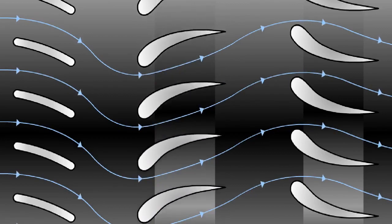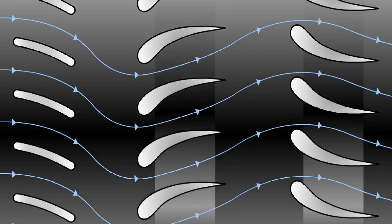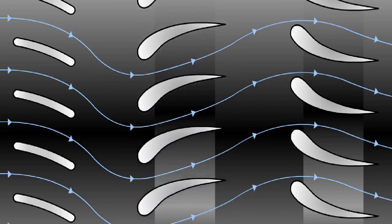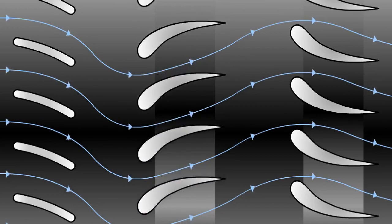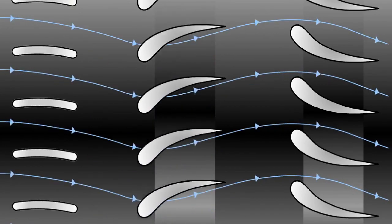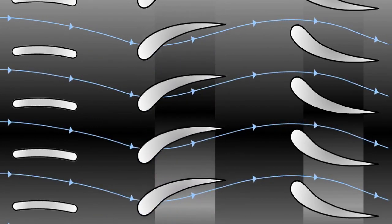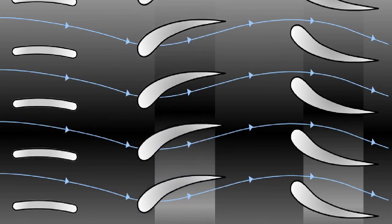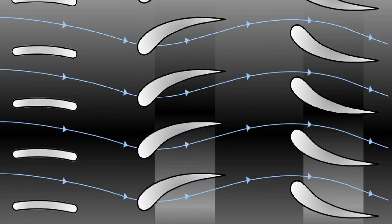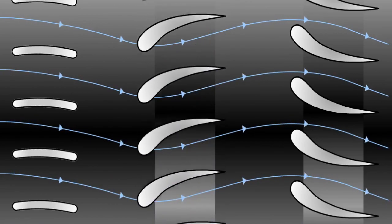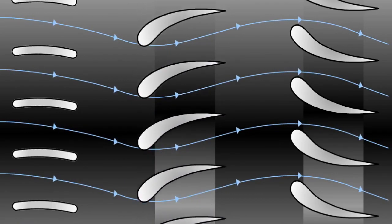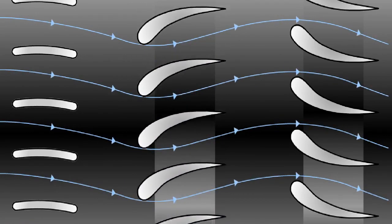Maintaining this optimum angle of attack allows a smooth and rapid engine acceleration. At high compressor speeds, the variable inlet guide vanes reduce the swirl imparted to the airflow, thereby maintaining the correct angle of attack of the air flowing over the rotor blades.